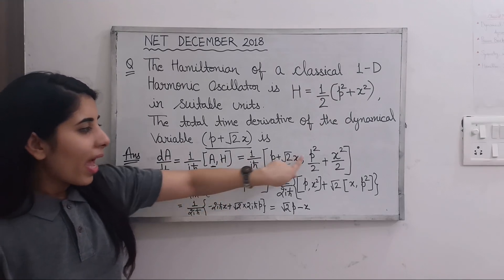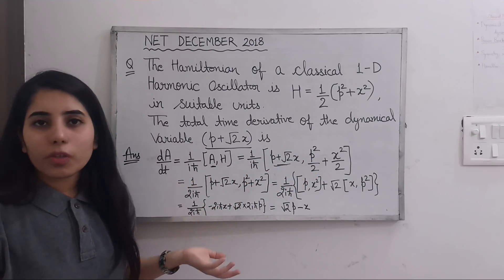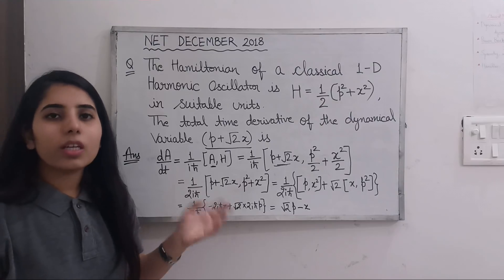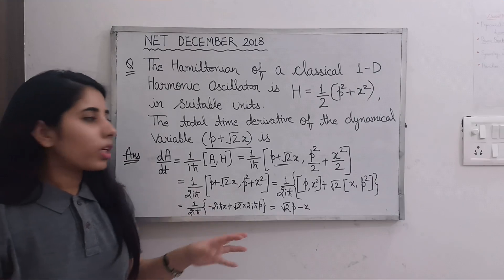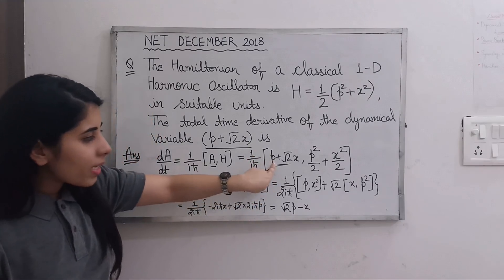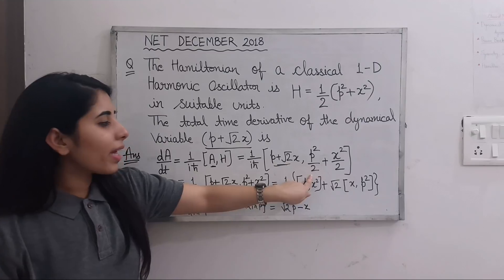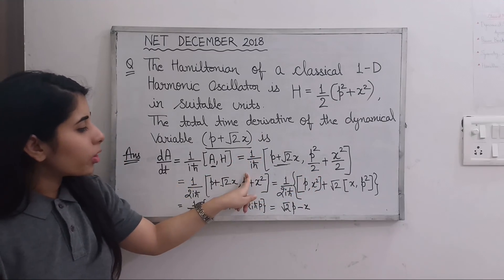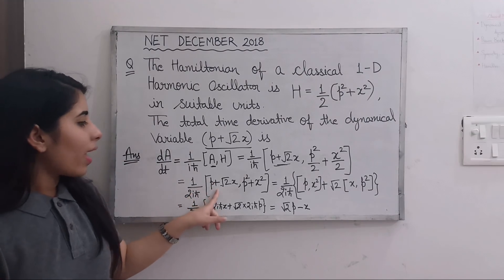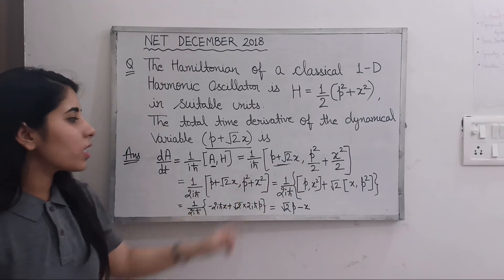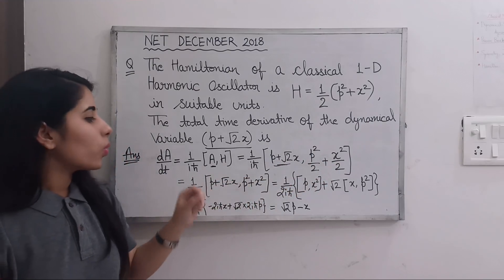If you find the commutator bracket of p with any function of p only, you get zero. Similarly, x with x² gives zero. So the surviving terms are: the commutator bracket of p with x², and the commutator bracket of x with p². We can take 1/2 common, giving us (1/2iℏ) times [p, x²] + √2·[x, p²].